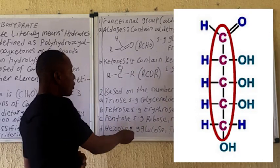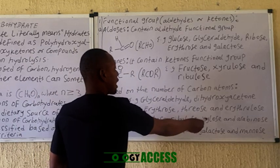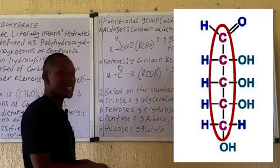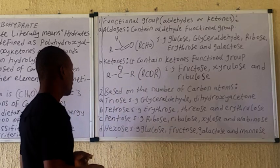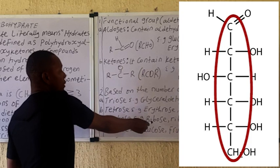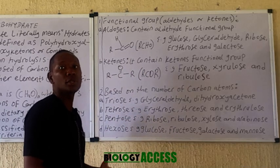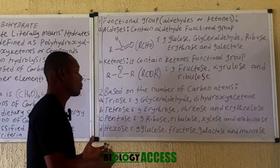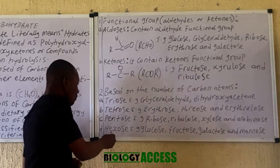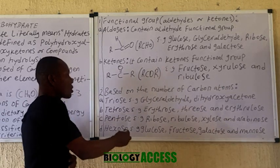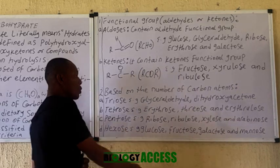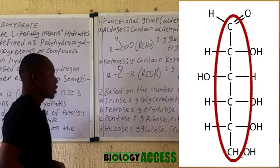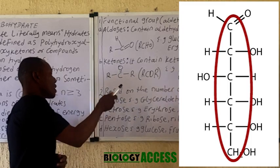Pentoses comprise five carbon atoms; the structure displayed on the board confirms five carbon atoms. Ribose is one of the common pentose molecules found in nature, present in DNA and RNA, as well as deoxyribose and ascorbic acid. Hexoses comprise six carbon atoms; examples include glucose, fructose, galactose, and mannose. The structure of glucose is displayed on the board showing six carbon atoms.